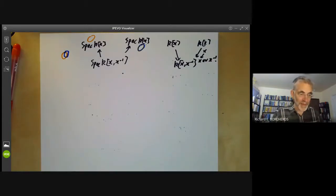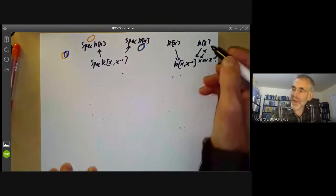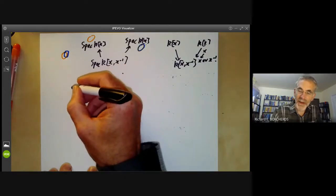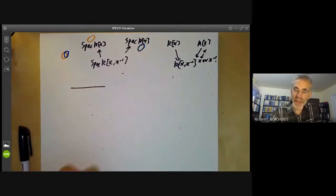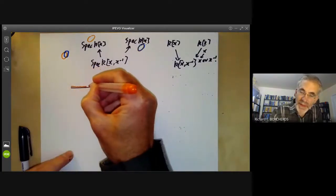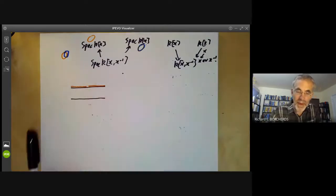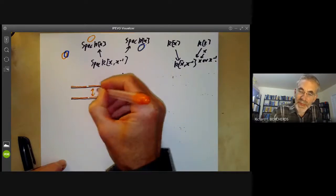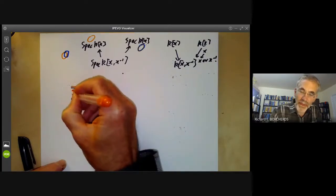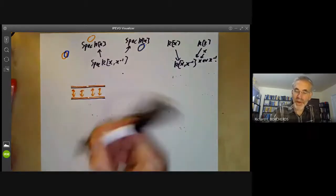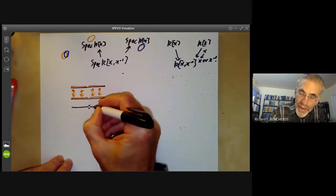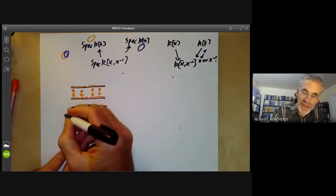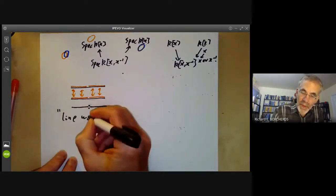Let's do the case where we map x to x. The picture is: we have a sort of affine line with an open subset — the affine line minus the origin — and another affine line with its open subset. We're gluing these two open subsets together by the identity map. If you try to picture that, what we get is one copy of each point except we get two copies of the origin. So this is going to give us a line with two origins.